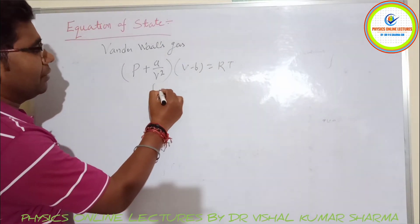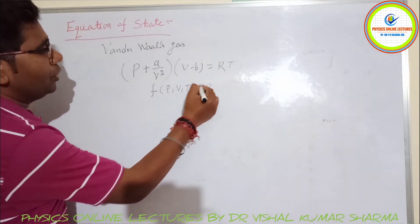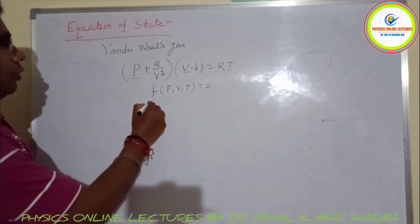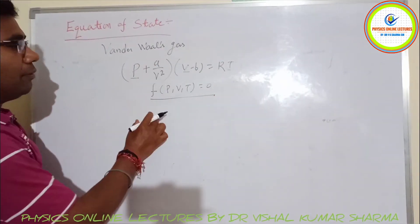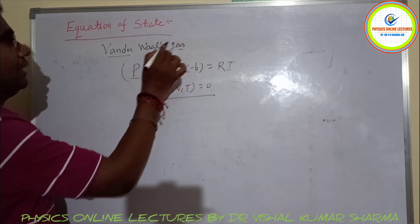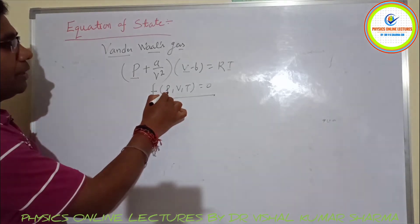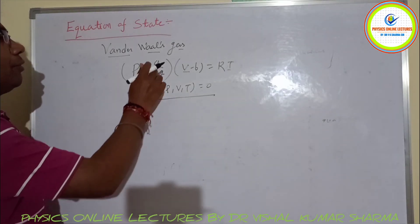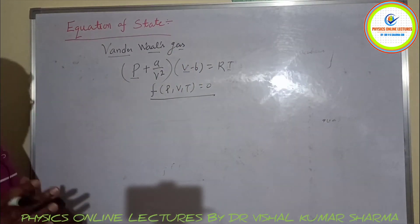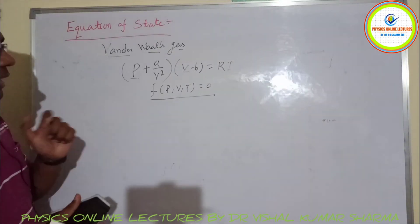This is a function of P, V, and T equal to zero — pressure and volume are present. This is the equation of state for the van der Waals gas, in which the thermodynamic variables pressure, volume, and temperature are all included in a single equation.